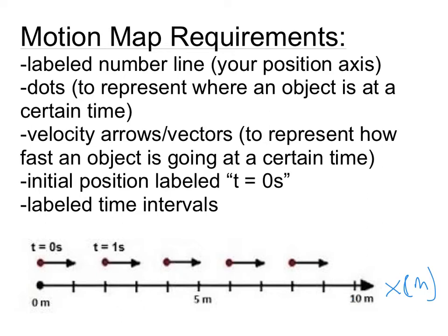Other requirements that we have is that we've got dots that indicate where you are or where the object is every second. So we can tell from this motion map that at zero seconds, the object starts at zero meters, and then a second later it moved two meters forward, and a second later it moved two meters forward. So that's very clear to us.